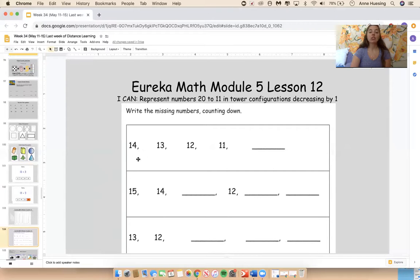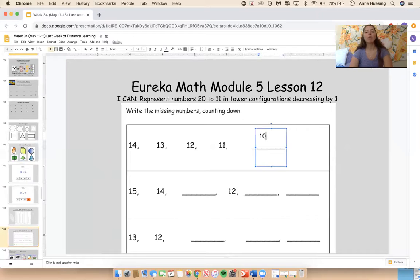14. This is 14. Excuse Miss Husing. This is 14, 13, 12, 11. What comes underneath 11? 14, 13, 12, 11. 10 comes right before 11. Very, very good.